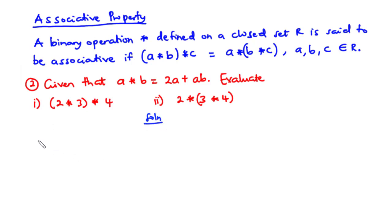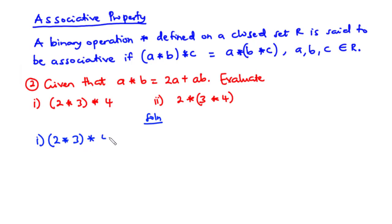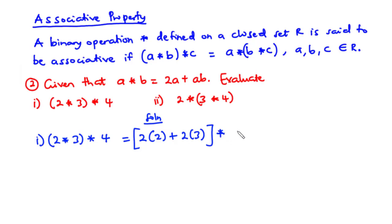So let's start off with (I): (2 star 3) star 4. First, we are going to use the binary operation to combine 2 and 3. Using A star B with A equal to 2 and B equal to 3, that gives us 2 times 2 plus 2 times 3, which is 4 plus 6. Star 4. So 4 plus 6 is 10, giving us 10 star 4.